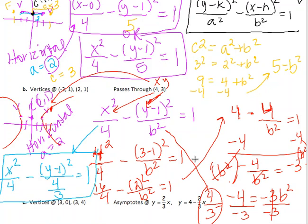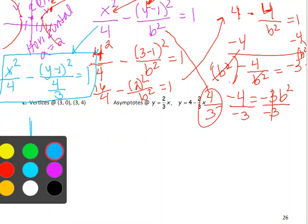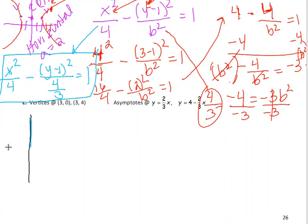All right, we have one more example, which is the one down below. So, in this problem, they give us vertices and asymptotes. So, again, one of my best pieces of advice to you is always sketch the graph. So, 3, 0 is here and 3, 4 is here.